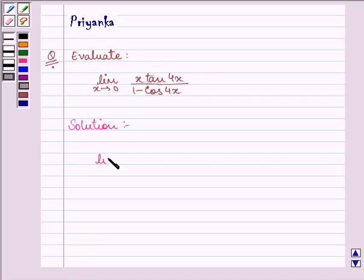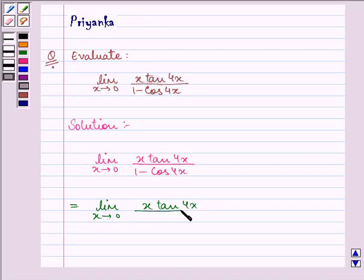Now here rewriting the given limit once again. Then we have it equal to limit x approaches 0, x tan 4x upon—now here we can write 1 minus cos 4x as 2 sin square 2x.